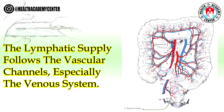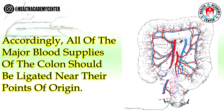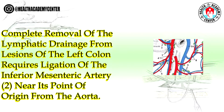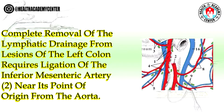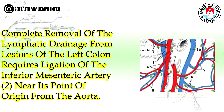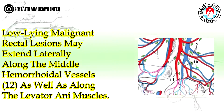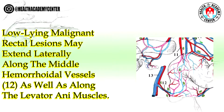The lymphatic supply follows the vascular channels, especially the venous system. Accordingly, all of the major blood supplies of the colon should be ligated near their points of origin, and these vessels should be ligated before a malignant tumor is manipulated. Complete removal of the lymphatic drainage from lesions of the left colon requires ligation of the inferior mesenteric artery (2) near its point of origin from the aorta.